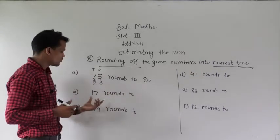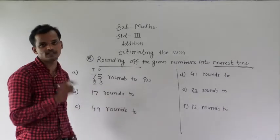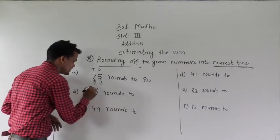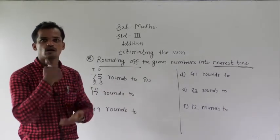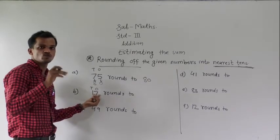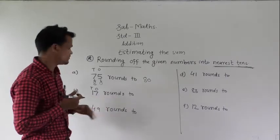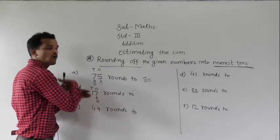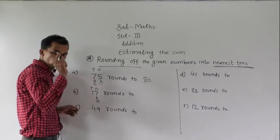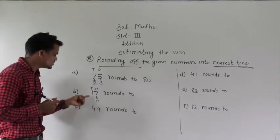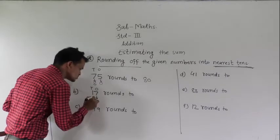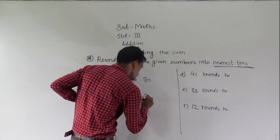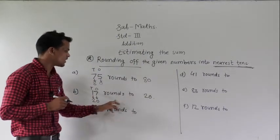Next example: 17 rounds to nearest 10. The ones place digit is 7, which is greater than 5, so this number will be rounded up. Write 0 under the ones place. Add 1 into the tens place digit: 1 plus 1 equals 2. So 17 rounds to 20.